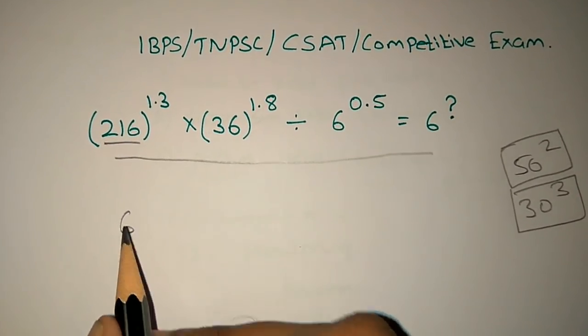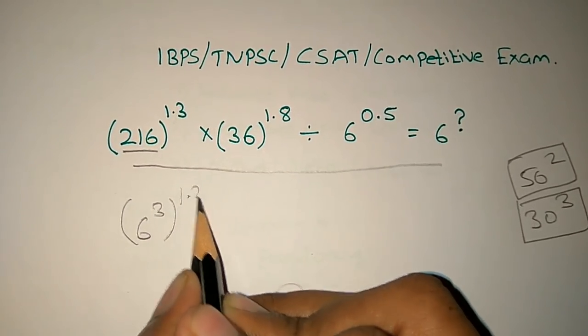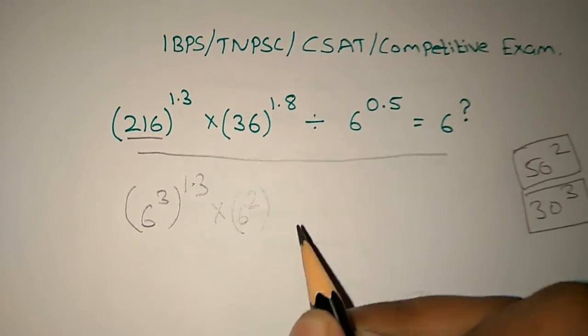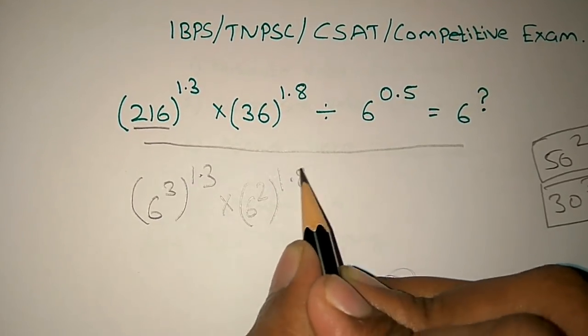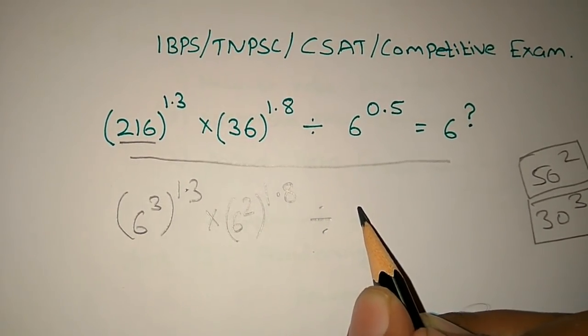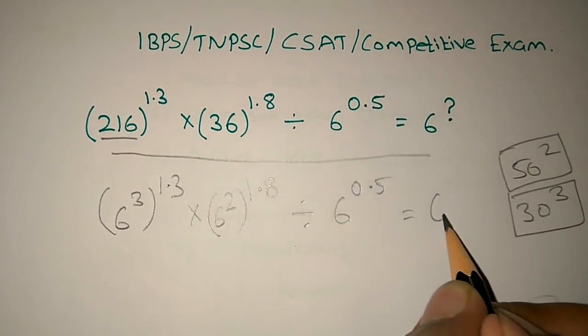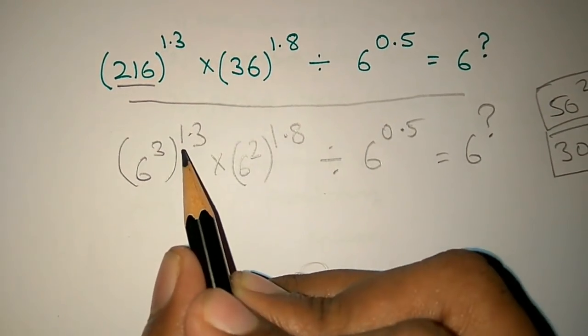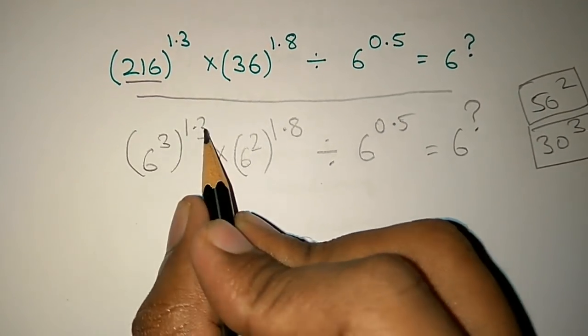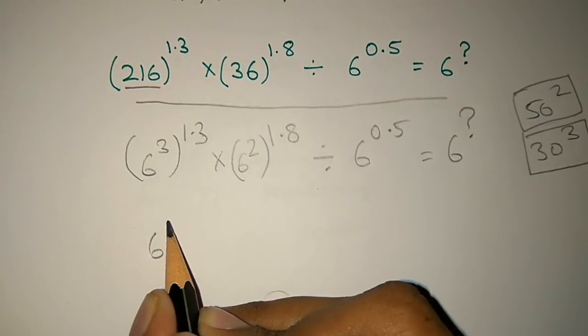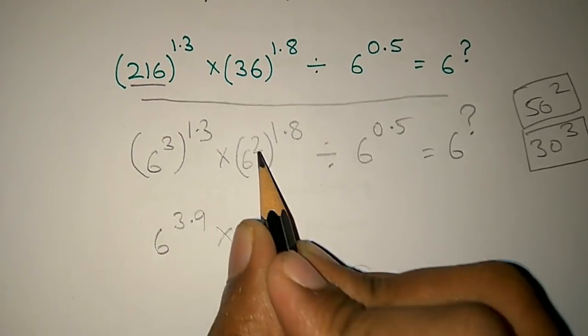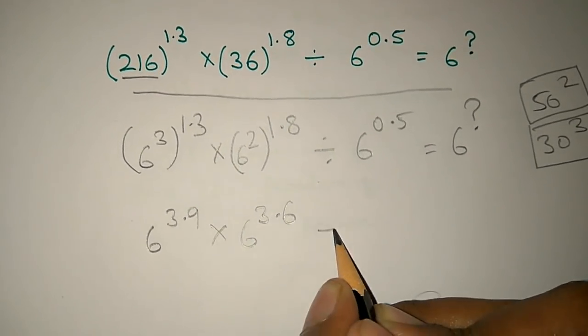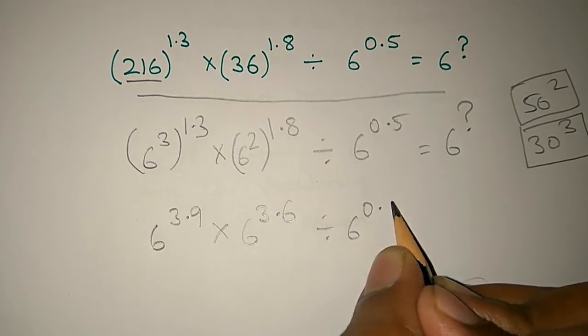Using the power rule, we multiply the exponents. So 3 into 1.3 is 3.9, and 2 into 1.8 is 3.6, divided by 6 to the power 0.5.